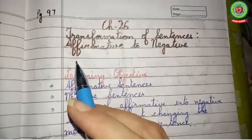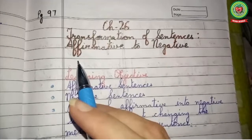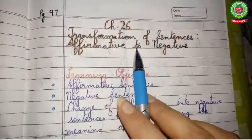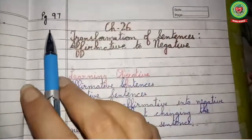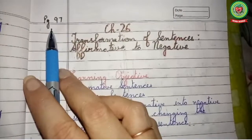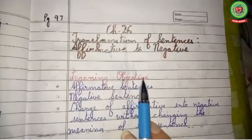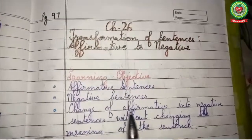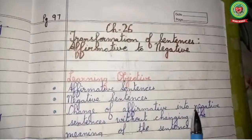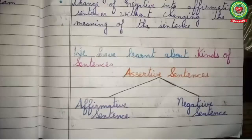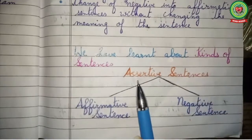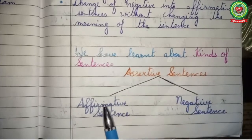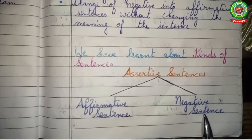Good morning everyone. Today we are going to start a new topic: Chapter 26, Transformation of Sentences - Affirmative to Negative. Open your books on page 97. In this video we will learn about affirmative sentences, negative sentences, and the change of affirmative into negative sentences without changing the meaning. We have learned about different kinds of sentences. One kind is assertive sentences, which are further divided into affirmative sentences and negative sentences.